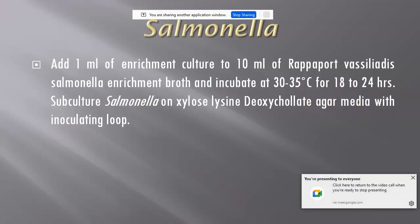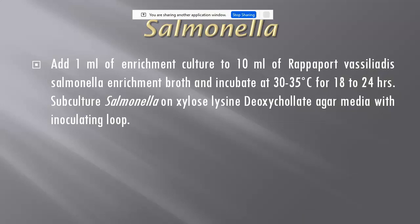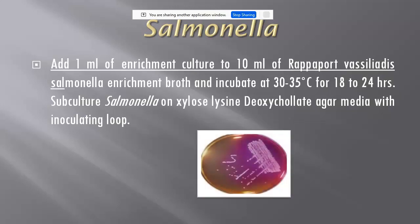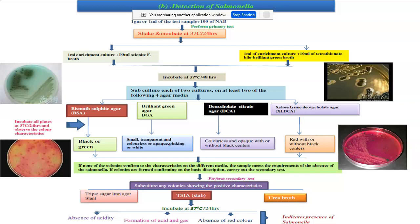The next test is detection of Salmonella, which is also a pathogenic microorganism. Transfer 1 ml of enrichment culture or pre-treated sample to 10 ml of Rappaport-Vassiliadis Salmonella enrichment broth. After incubation at 30 to 35 degrees Celsius for 18 to 24 hours, subculture onto xylose lysine deoxycholate agar medium using a nichrome wire loop. After incubation, if characteristic colonies appear on the specific or differential nutrient media, it indicates the pharmaceutical product contains the pathogen.